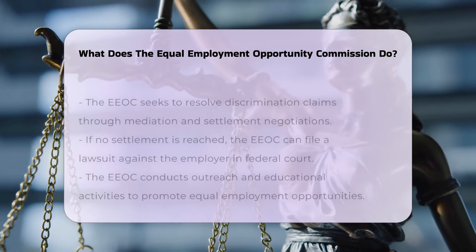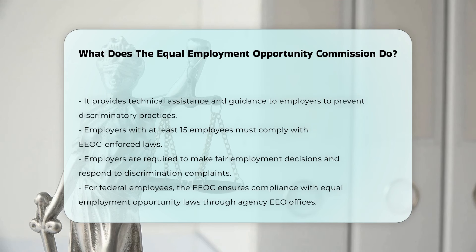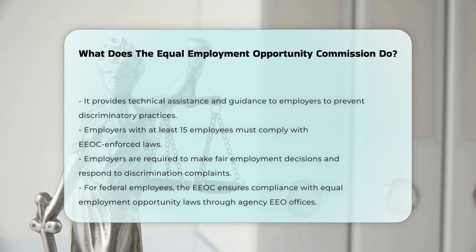Responsibilities for Employers. Employers with at least 15 employees — 20 for age discrimination cases — are subject to the laws enforced by the EEOC. Employers must make fair employment decisions, craft unbiased policies, provide equal pay, respond to discrimination complaints, and display posters detailing federal employment discrimination laws.